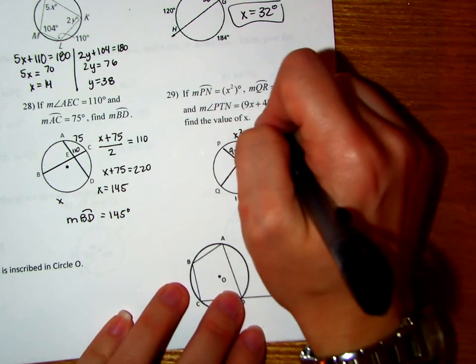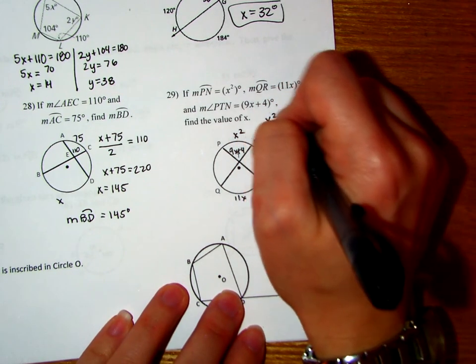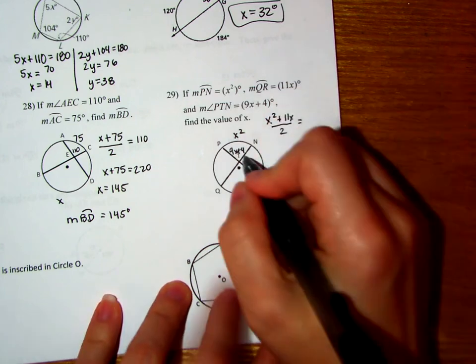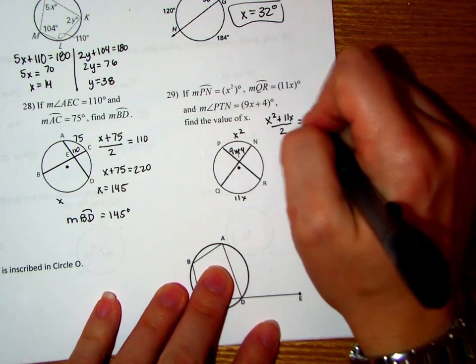So we're going to set this up. The two arcs, so the X squared plus the 11X, divided by 2 is going to equal this interior angle, 9X plus 4.